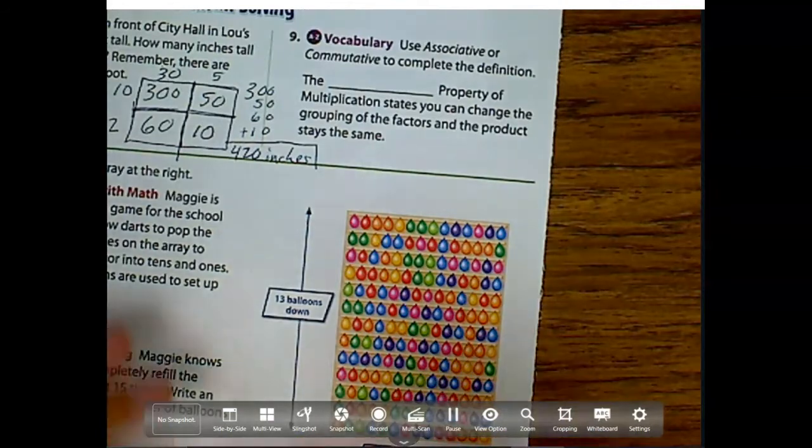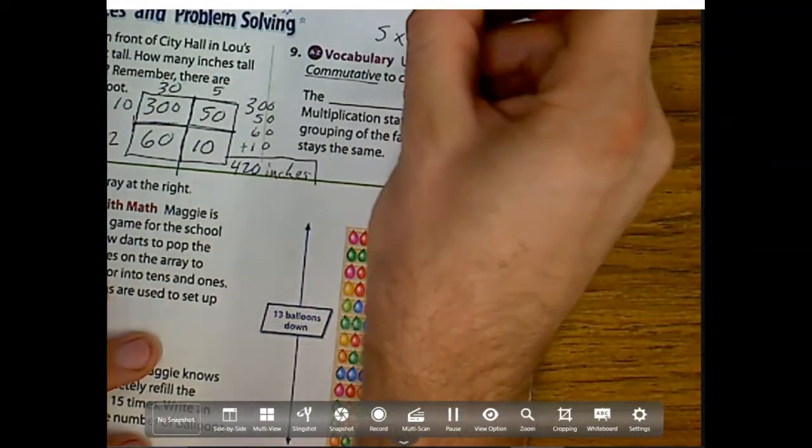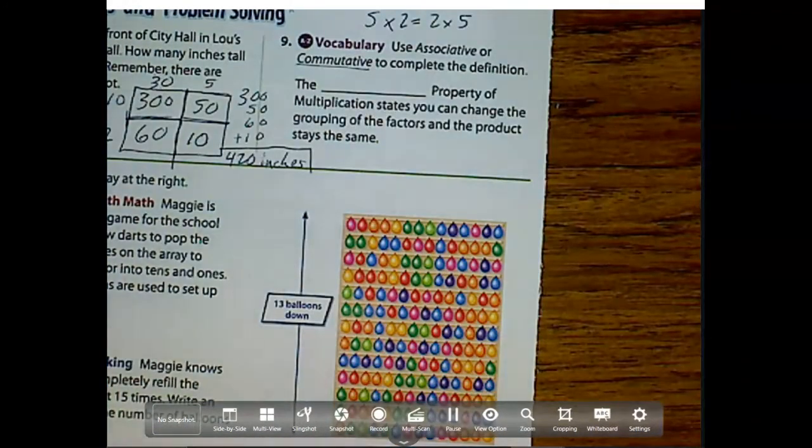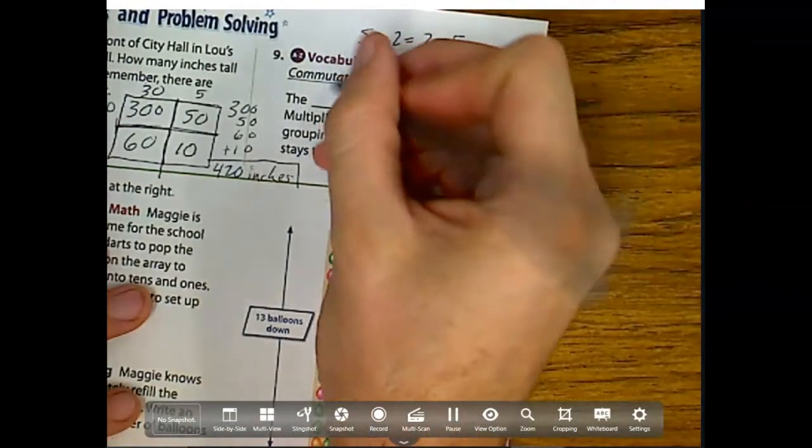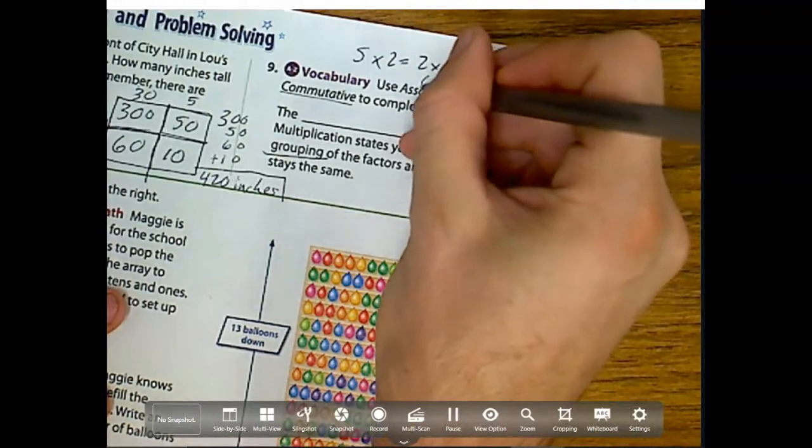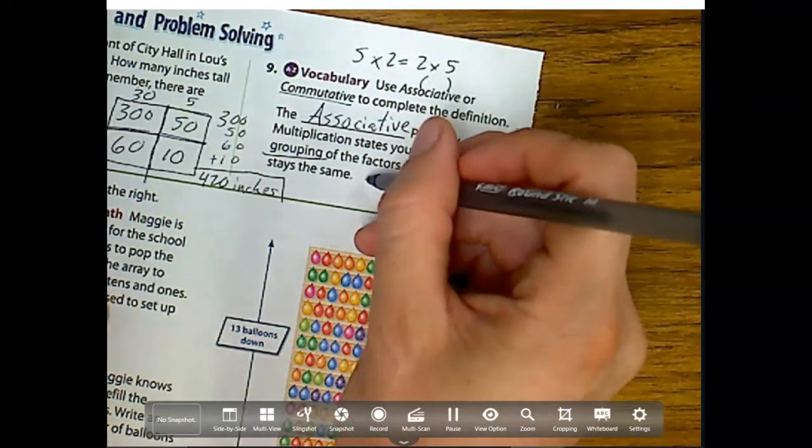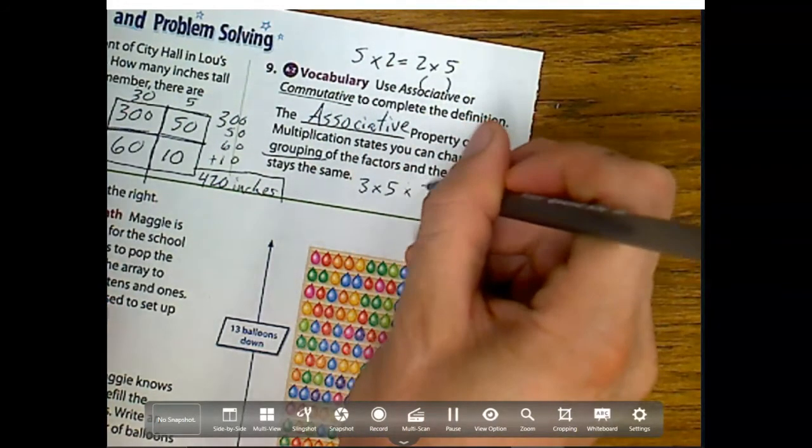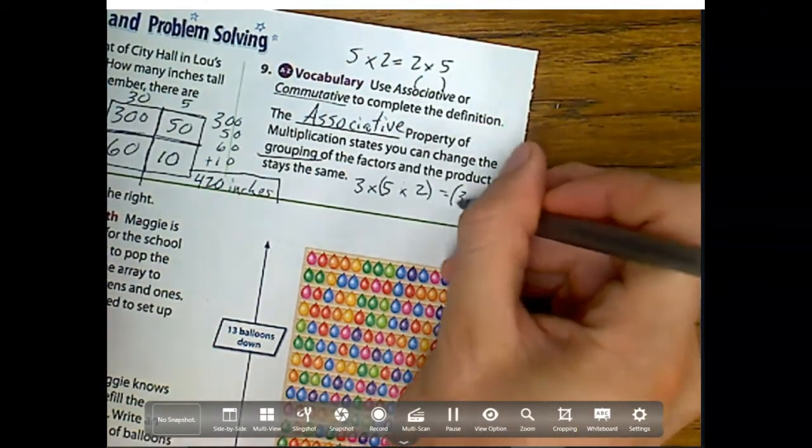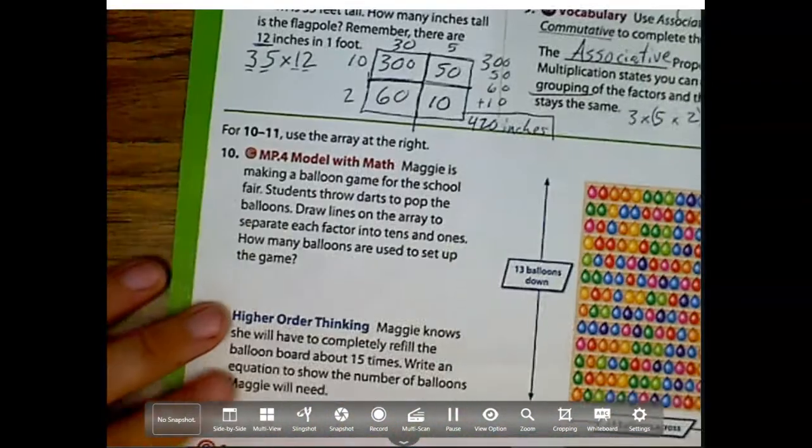Now for number 9, use associative or commutative. Remember, commutative means we can change the order. So our commutative property, if you remember, was 5 times 2 equals 2 times 5. The blank property multiplication states you can change the grouping of factors and the product stays the same. Well, since it's not commutative because it's not saying we're changing the order of them, it's just changing the grouping. Grouping is our associative. What that's saying is this, we can do 3 times 5 times 2 is the same as changing that grouping of doing 3 times 5 first times 2. So it's really just changing the parentheses versus changing the order.